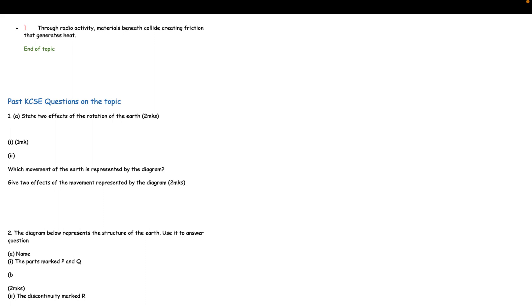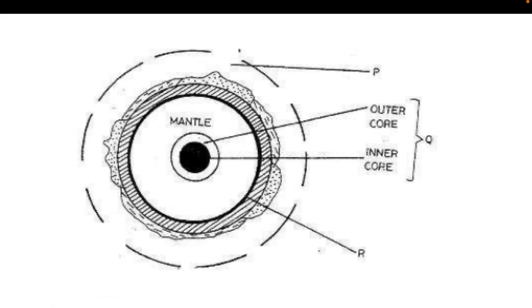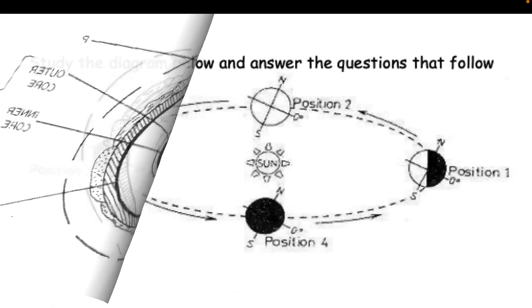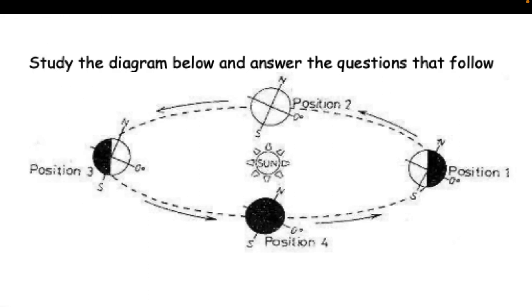2. The diagram below represents the structure of the earth. Use it to answer question: (a) Name (i) the parts marked P and Q (2mks). (b) Study the diagram below and answer the questions that follow (2mks). (c) The discontinuity marked R (1mk).